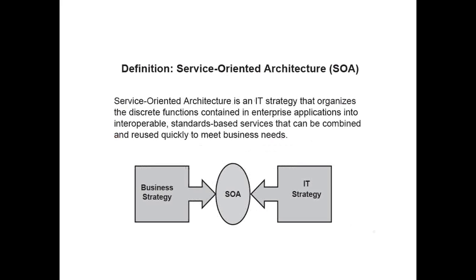Let's start off. What SOA actually means is: SOA is an IT strategy that organizes discrete functions containing enterprise applications into interoperable, standard-based services that can be combined and reused between business needs. All that SOA does is — it is a strategy which tries to combine business strategy with IT strategy. We will see how it does it. Some of the key words here are 'interoperable' and 'standard-based.' As we go, we will talk about what interoperability and standard-based systems mean.